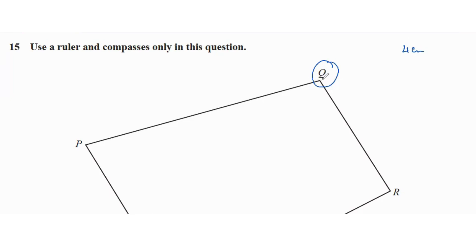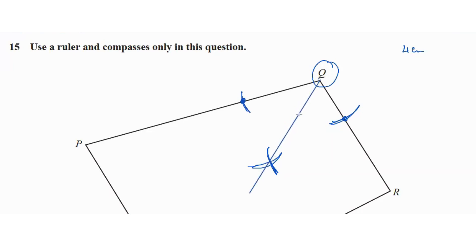Once you've opened the compass to 4 centimeters, put it at Q and draw an arc. Keeping the measurement the same, draw another arc on the other side. Then, without changing the measurement, put the compass on each intersection point and draw two more arcs. Once you've drawn these arcs, connect Q through the center of the last arc drawn — this is your angle bisector.